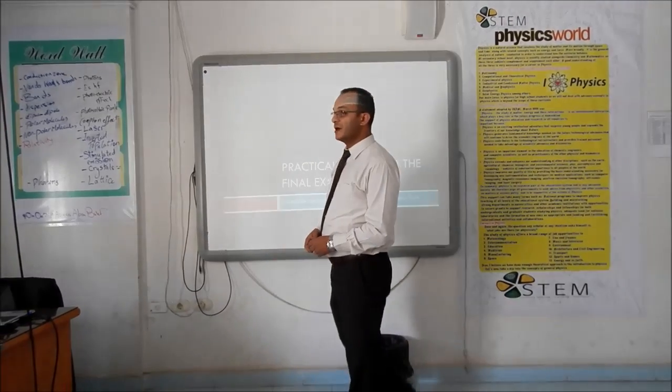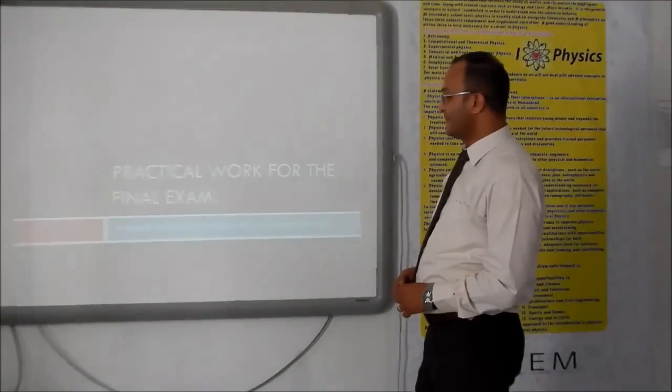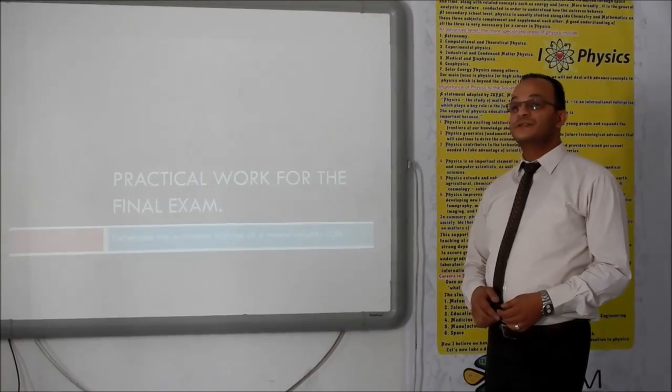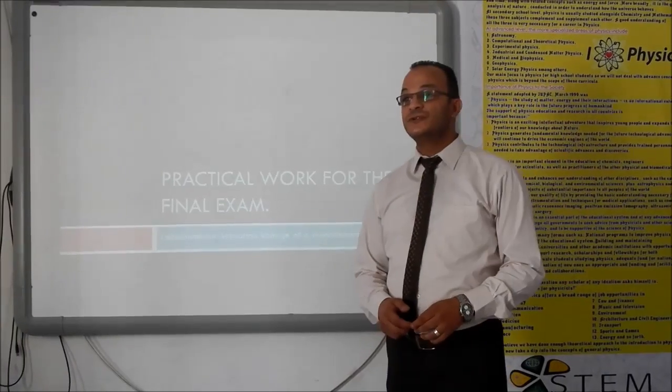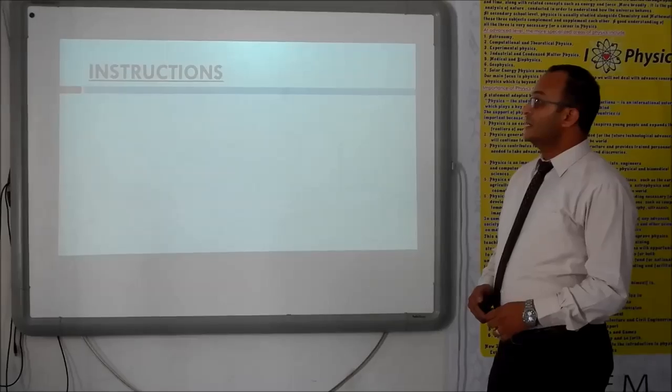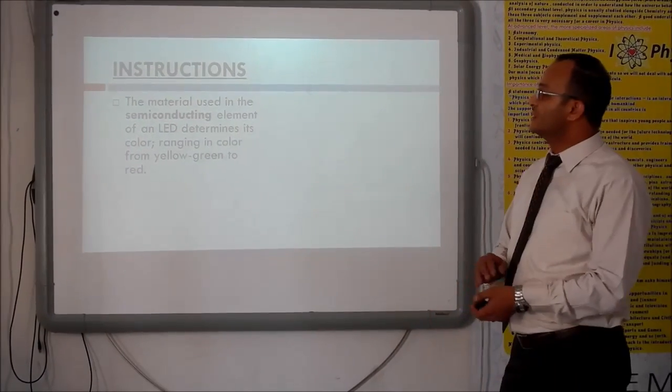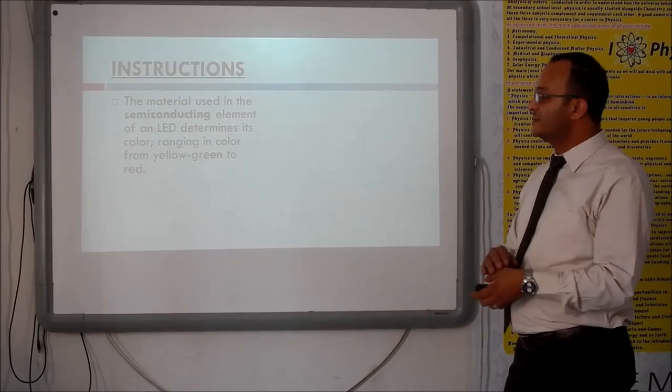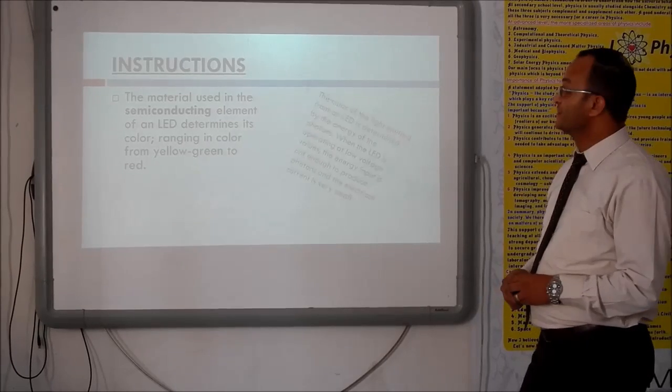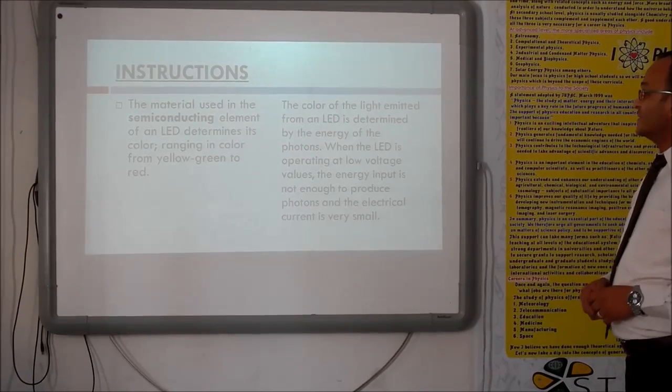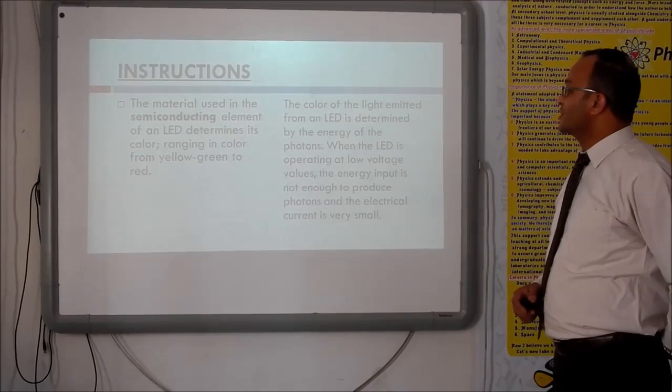Everybody, let's talk about our next exam, the practical work for the final exam. Here we are going to determine the activation voltage of a monochromatic light using one LED. The instructions include: the material used in the semiconducting element of an LED determines its color, ranging in color from yellow-green to red. The color of the light emitted from an LED is determined by the energy of the photons.